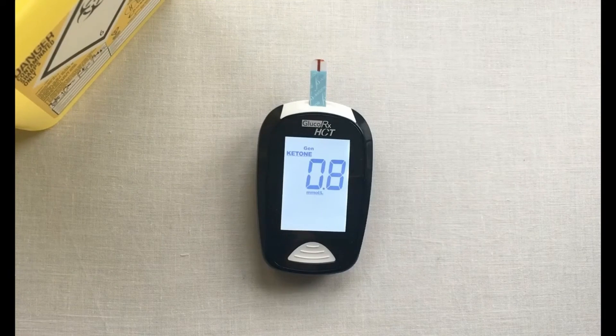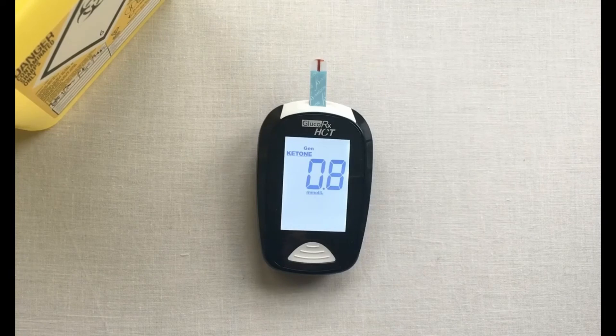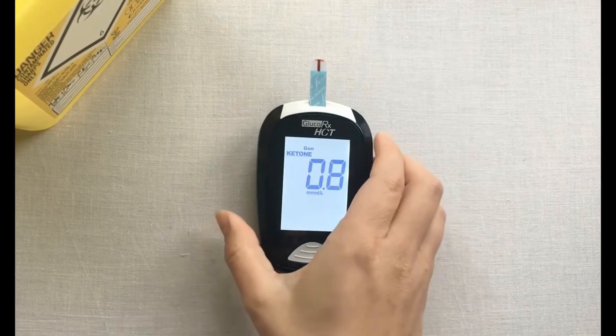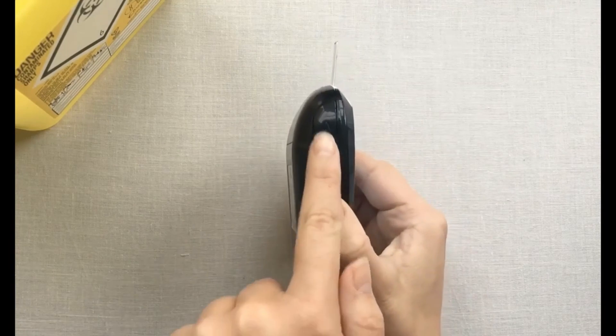Your result is displayed on the screen. You can either manually remove the test strip or use the strip ejector button.